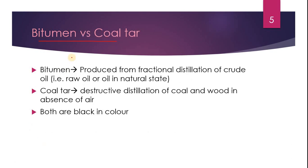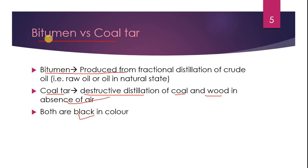Bitumen versus coal tar: we already saw how bitumen is obtained. Coal tar is obtained by destructive distillation of coal and wood in the absence of air. Both are black in color, so some people get confused between bitumen and coal tar.